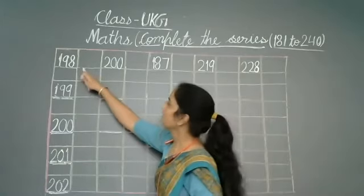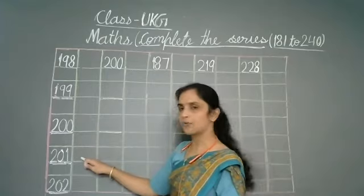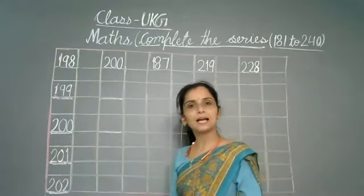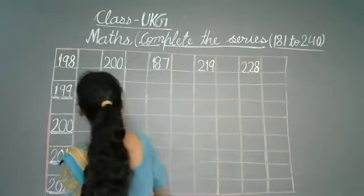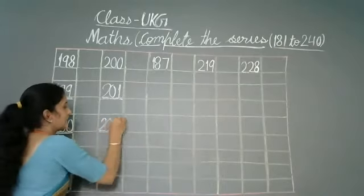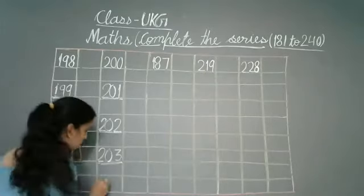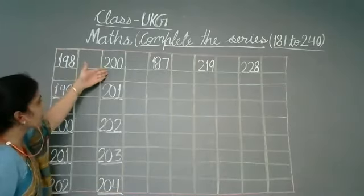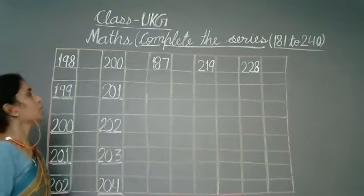Speak with me again. Repeat: 198, 199, 200, 201, and 202. Next, we have got 200. After 201 comes 202, then 203, and after three comes four. So: 200, 201, 202, 203, 204.